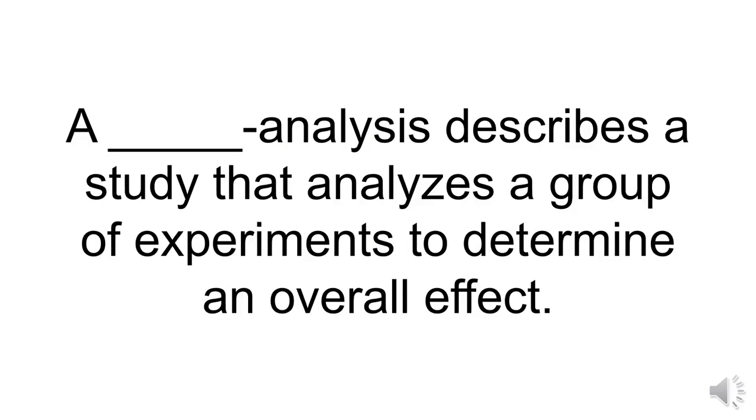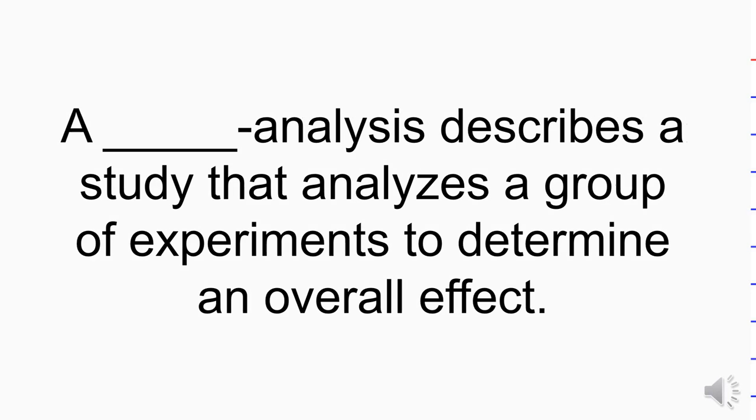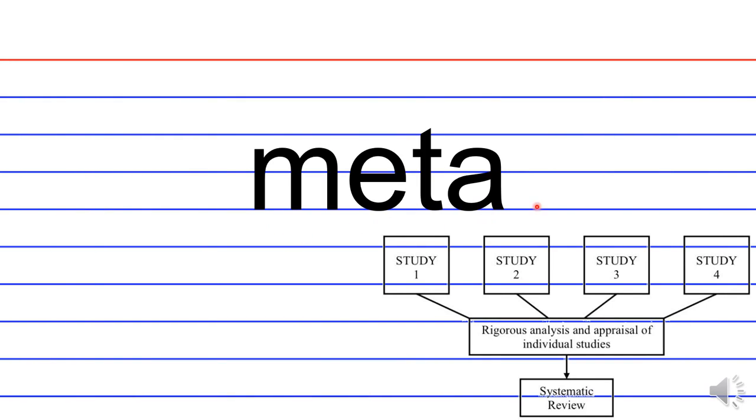A blank analysis describes a study that analyzes a group of experiments to determine an overall effect. So what type of study analyzes a group of experiments as opposed to one experiment? That would be a meta-analysis. So here we have four studies and they're rigorously analyzed and appraised, and then an overall review is given based on those four different studies.